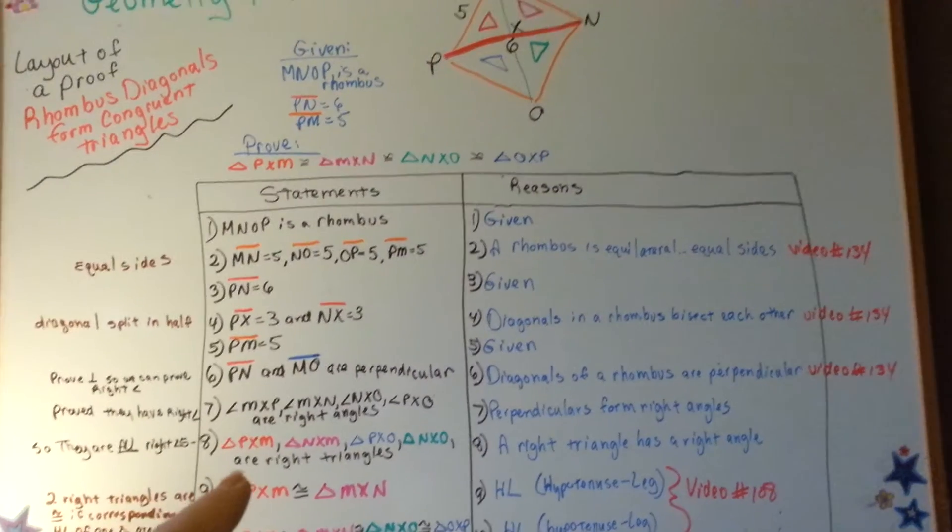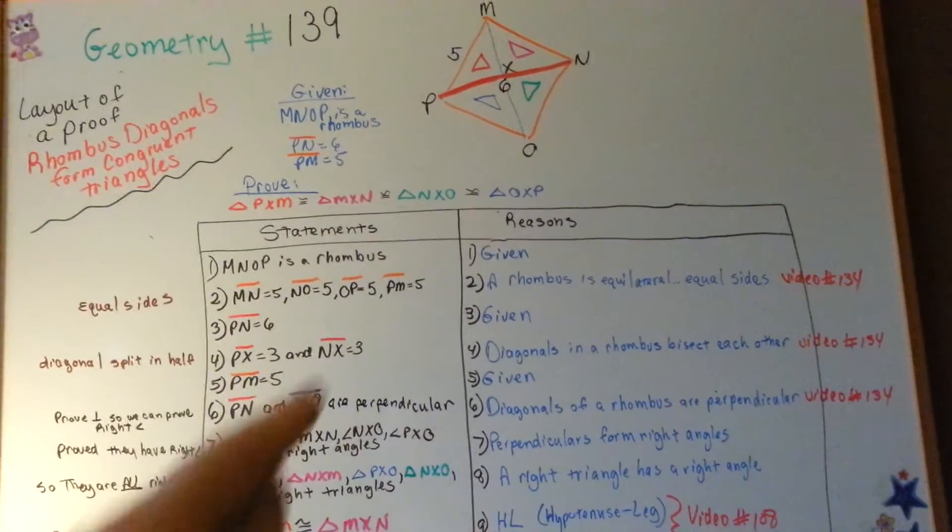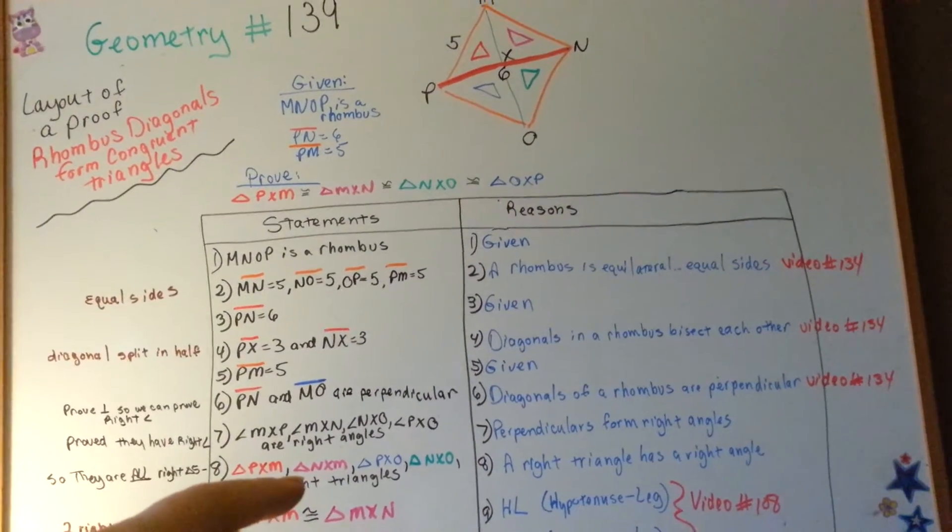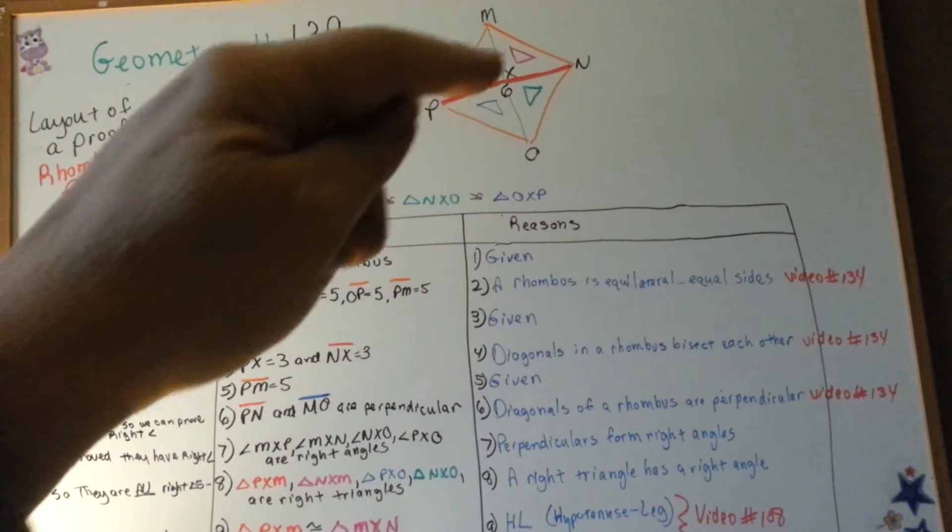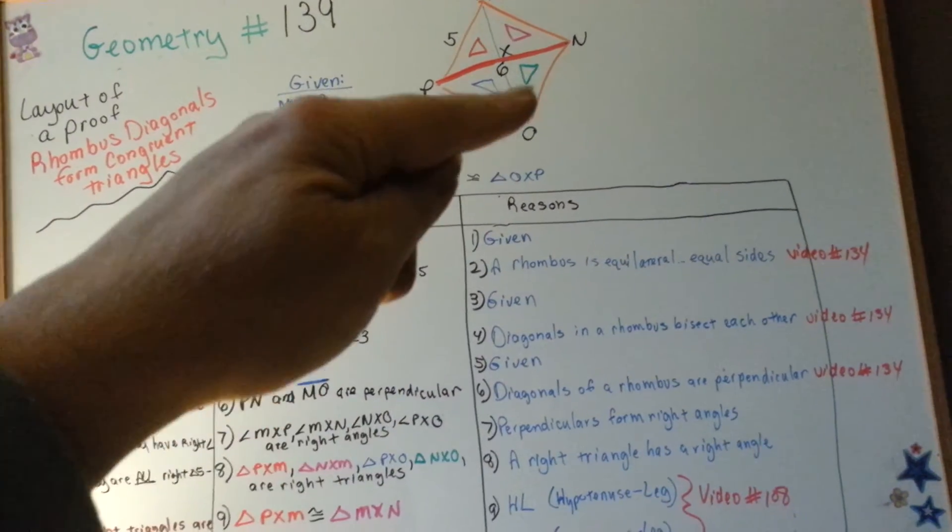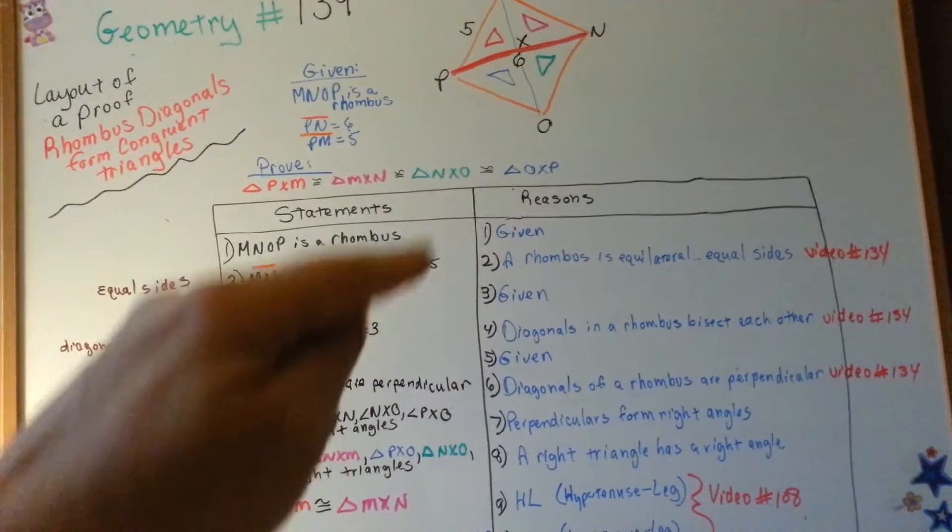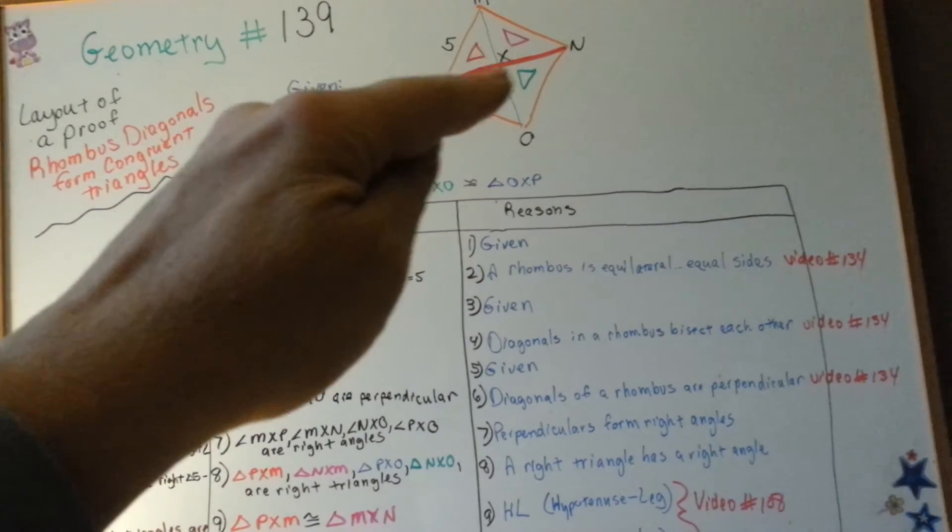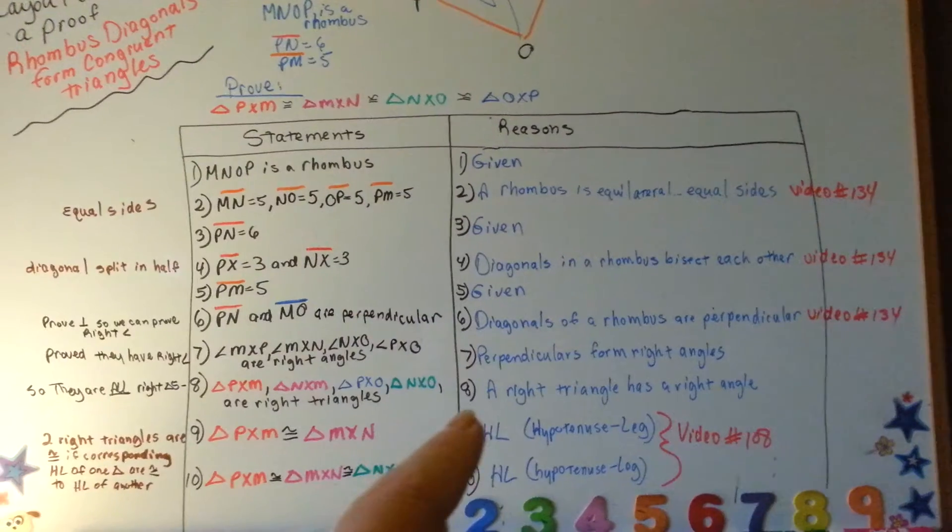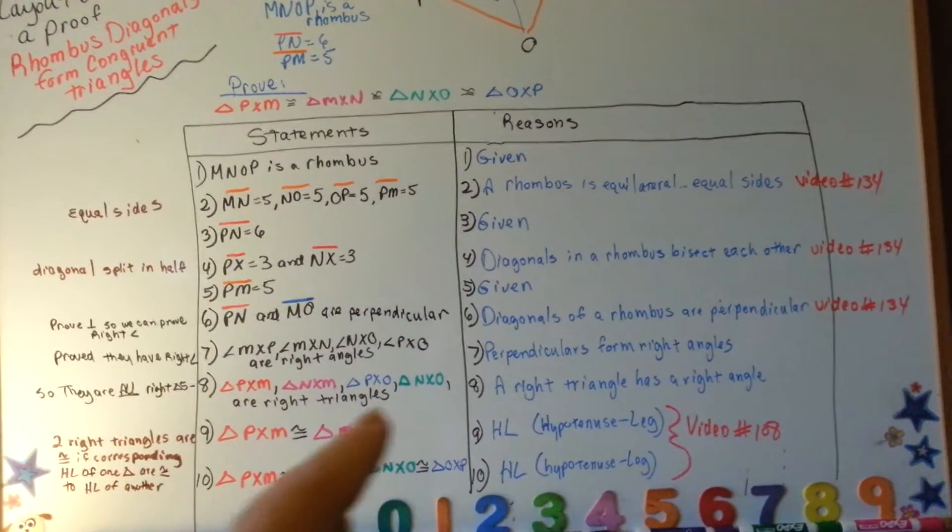So now I'm going to say that PXM, the red one, and NXM, the pink one, the blue one, and the green triangle are right triangles because of this perpendicular thing that we put in the reasons. A right triangle has a right angle.